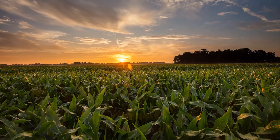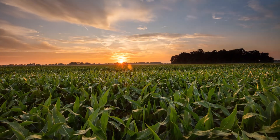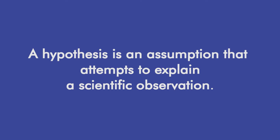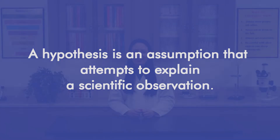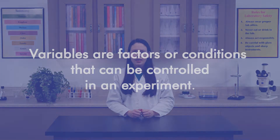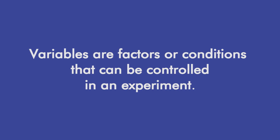For each experiment, we will begin with a hypothesis. A hypothesis is an assumption that attempts to explain a scientific observation. To test a hypothesis, a researcher experiments with certain variables to determine how those variables affect a particular outcome. Variables are factors or conditions that can be controlled in an experiment.